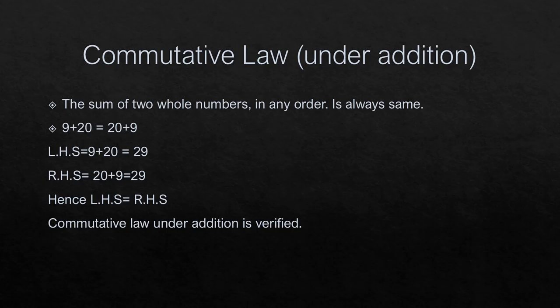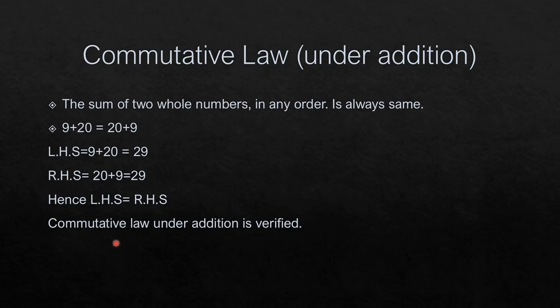Commutative law under addition: in this law we are taking two whole numbers. The sum of two whole numbers in any order is always the same. We are taking two whole numbers 9 and 20. 9 plus 20 equals 20 plus 9. Left hand side is 9 plus 20 which equals 29, and the right hand side 20 plus 9 is also 29. Left hand side equals right hand side — order does not matter, result is same. Hence commutative law under addition is verified.